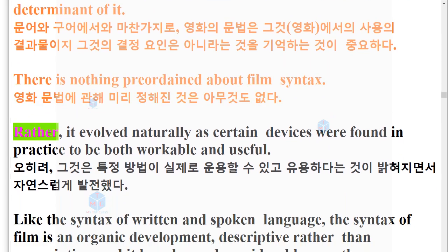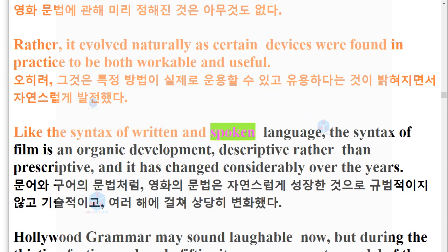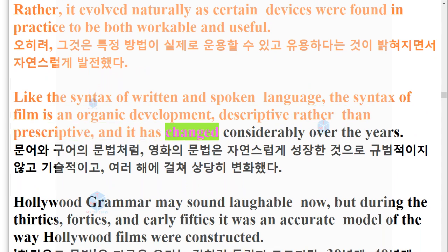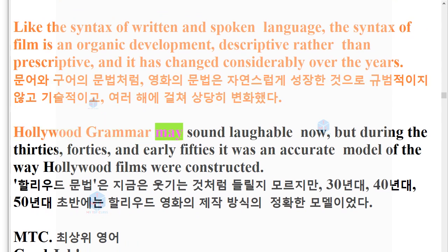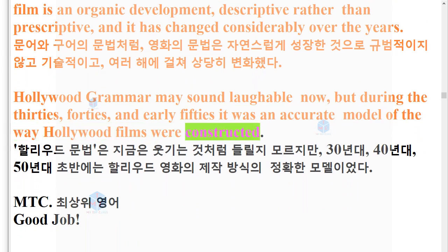There is nothing preordained about film syntax. Rather, it evolved naturally as certain devices were found in practice to be both workable and useful. Like the syntax of written and spoken language, the syntax of film is an organic development, descriptive rather than prescriptive, and it has changed considerably over the years. Hollywood grammar may sound laughable now, but during the 30s, 40s, and early 50s it was an accurate model of the way Hollywood films were constructed.